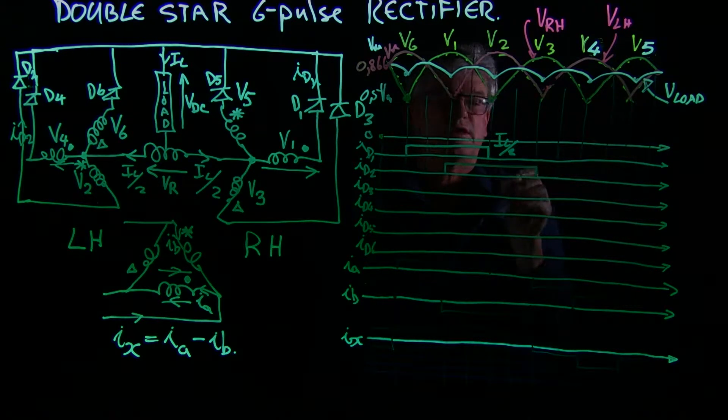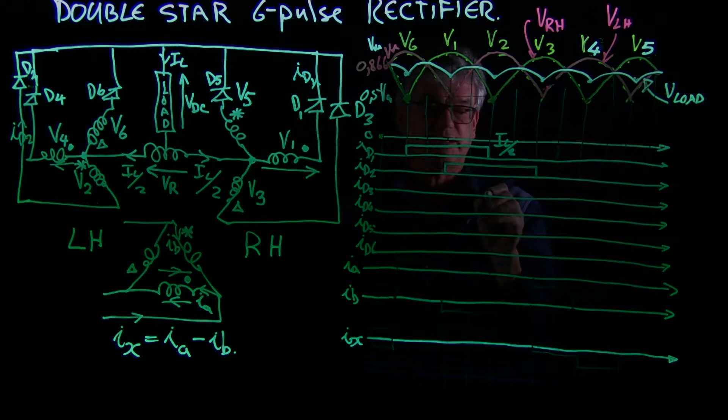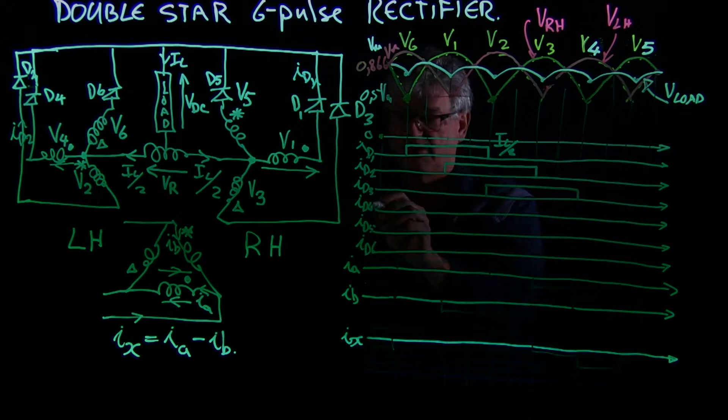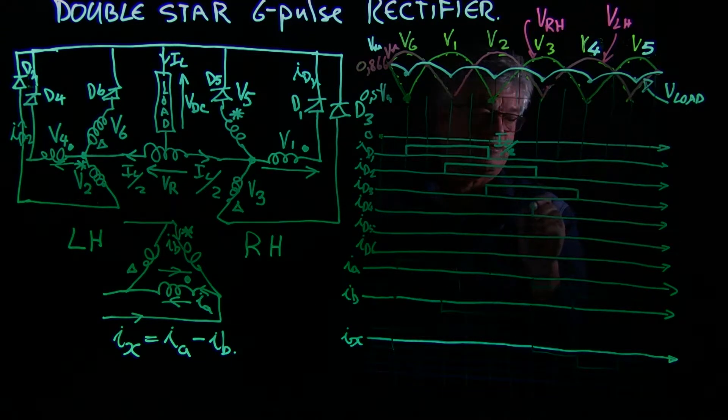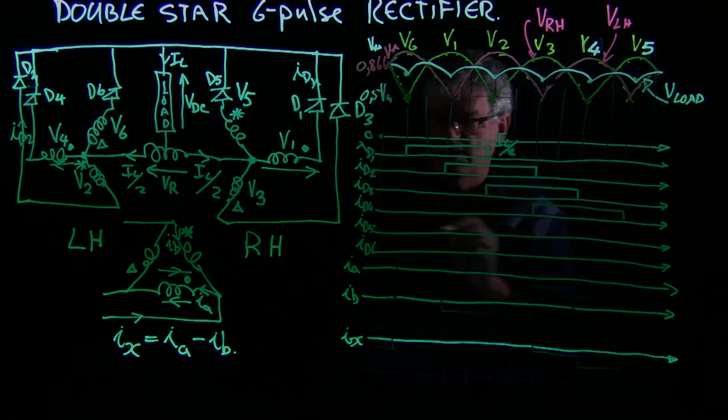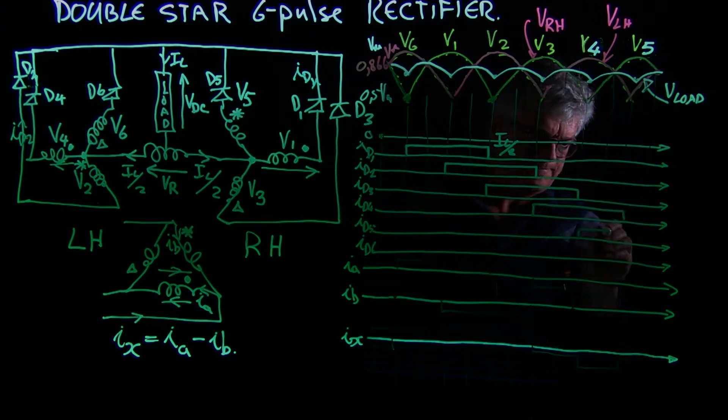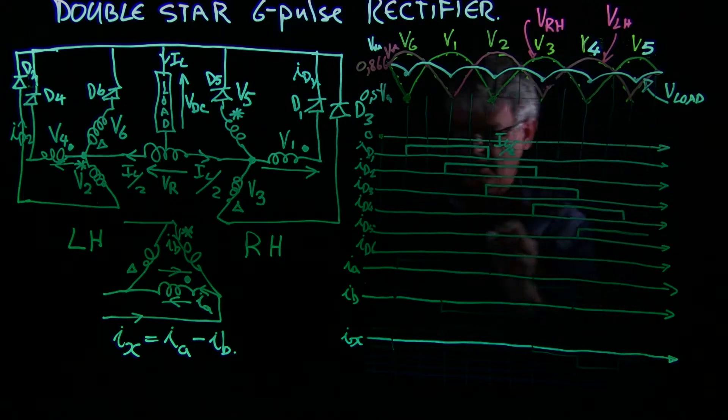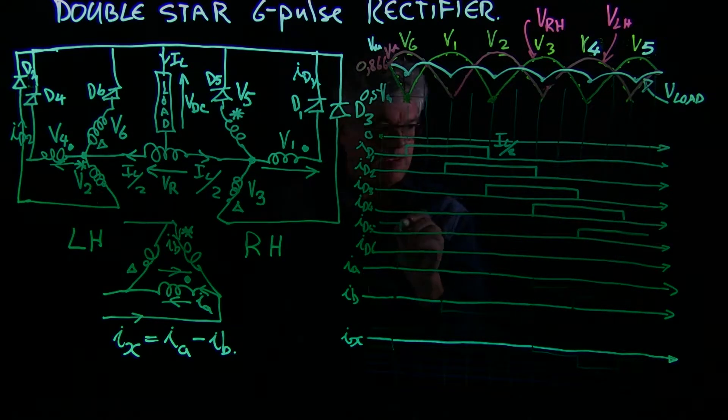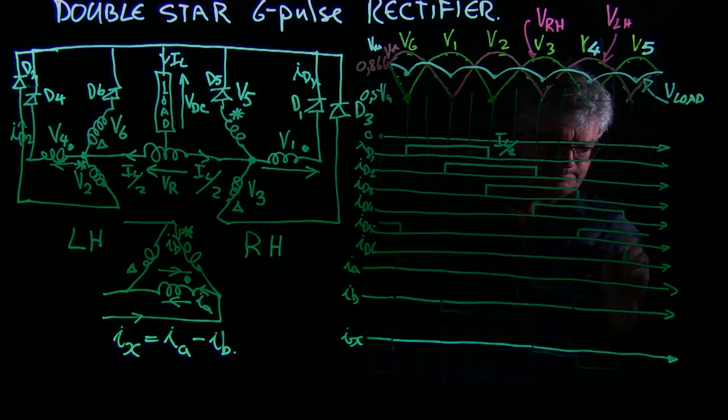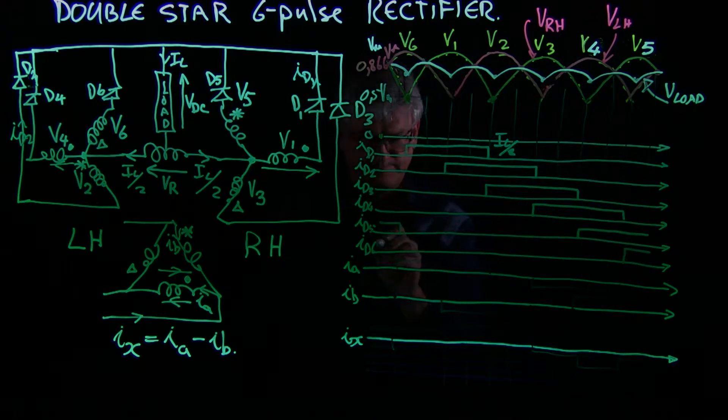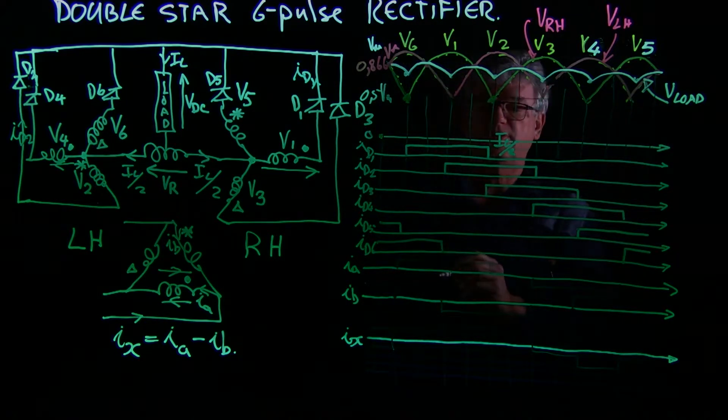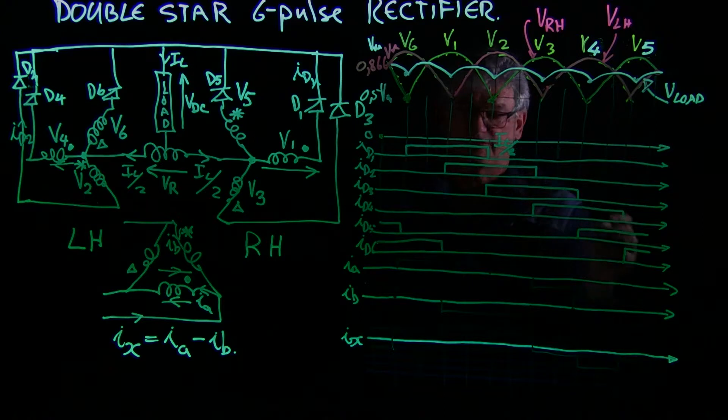to there with the same magnitude. And similarly, we have diode D3 current, diode D4's current, diode D5's current, and diode D6's current, and each one of them only having a magnitude of IL over 2.